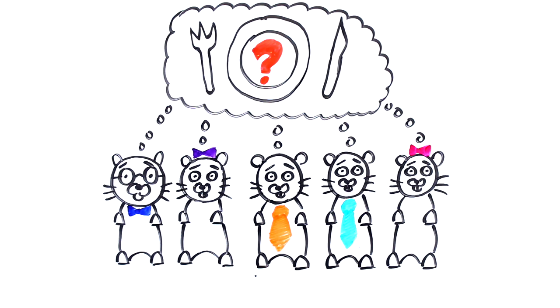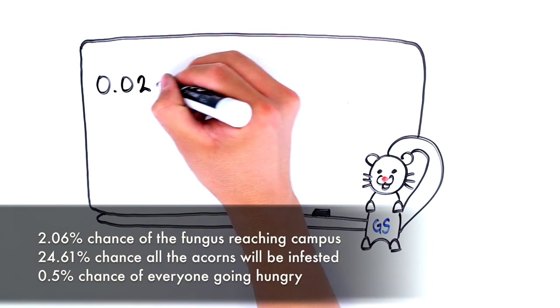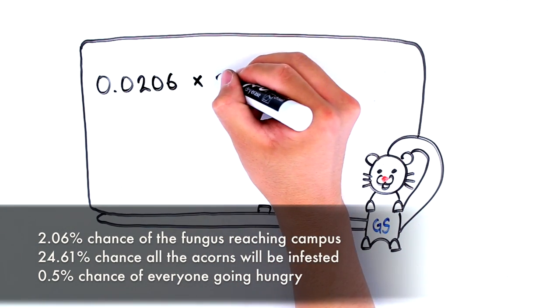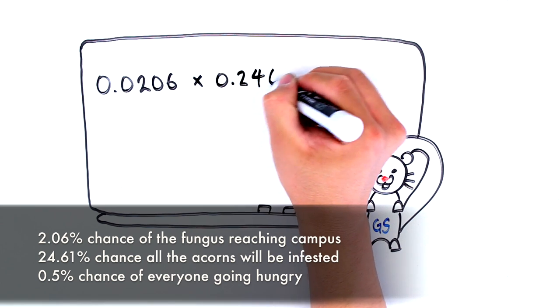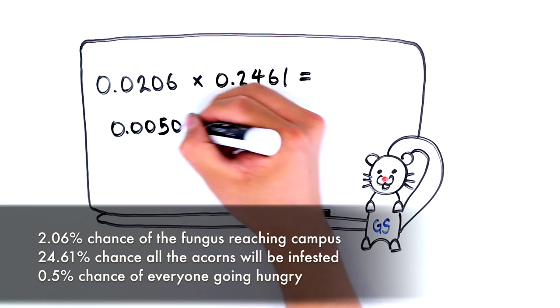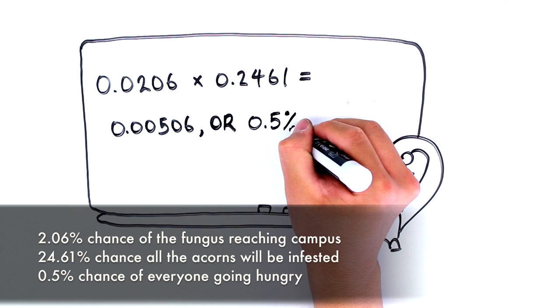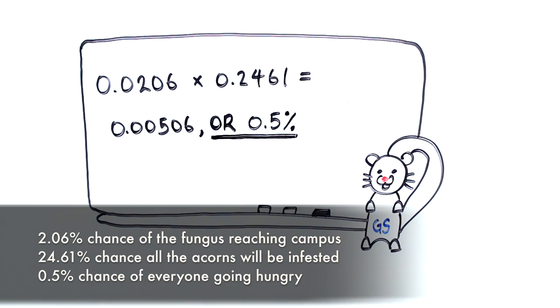The same point could have been made by saying that even if the fungus did arrive, there was still a 3 in 4 chance that some acorns would not be affected. In reality, there was only a 2.06% chance that the fungus would reach the campus, and then a 24.61% chance that it would infect all of the acorns. So, the chance of everyone going hungry was really less than 1%.